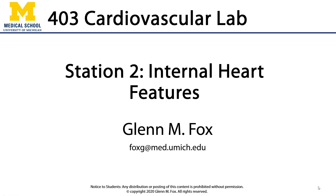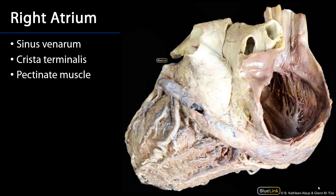Let's talk about the internal features of the heart. The heart, as you know, is a four-chambered organ. There are two atria which receive blood and two ventricles which distribute blood from the heart.